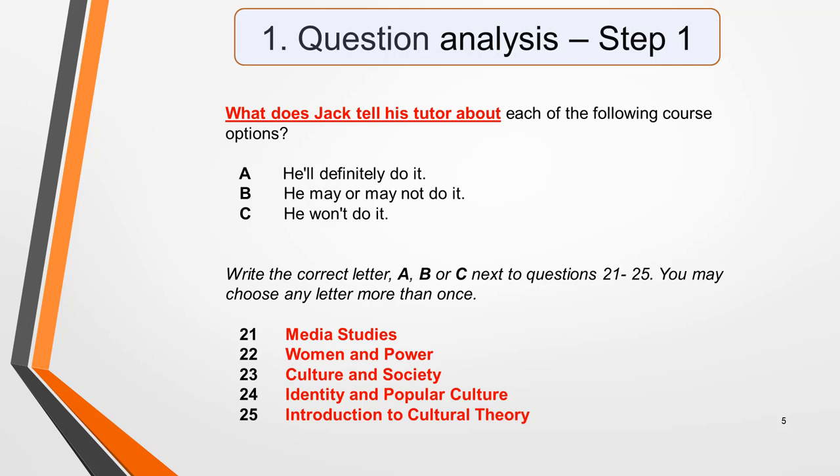One of the biggest challenges with matching questions is that they can be confusing when you first see them. So start by analyzing the question to make sure you fully understand what you have to do. There are two steps to this process. First, you need to understand the relationship between the question sentence and the question options 21 to 25. Highlight the key part of the question sentence and think about how it relates to these options.